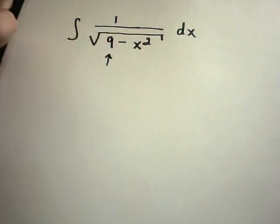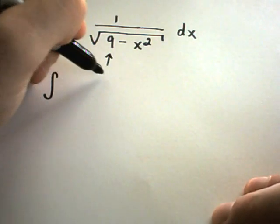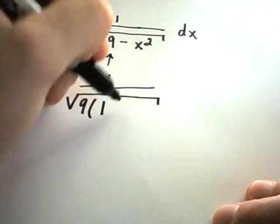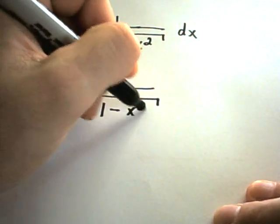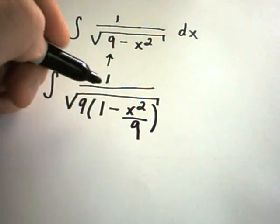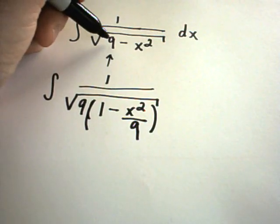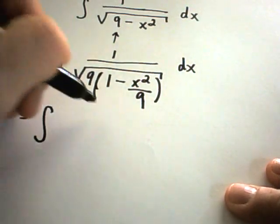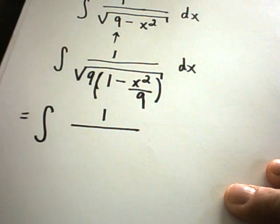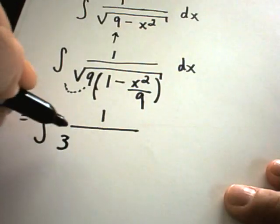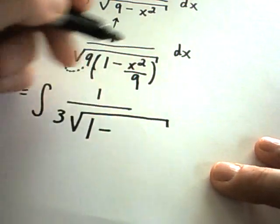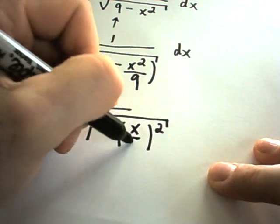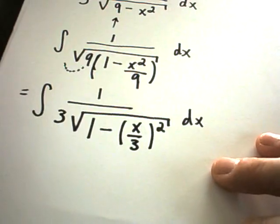Again, it says instead of a 9, I would like to have a 1 there. Well, I'm going to make that a 1 by underneath the square root, I'm going to factor a 9 out. So 9 times 1 is 9. And then I can rewrite, I'll have to rewrite x squared as x squared over 9, because again, if I distribute the 9 out underneath the square root, I will get 9 minus x squared back again. Remember, if you have two things being multiplied under a square root, you can take the square root of each thing individually. So the square root of the 9 is going to come out as a 3. And then I've got 1 minus x squared over 9 left. But again, I want to rewrite that as a quantity squared. So I'm going to rewrite that as x over 3 squared.